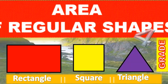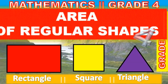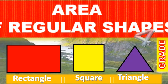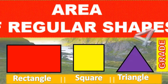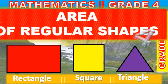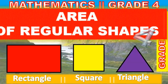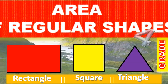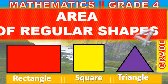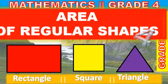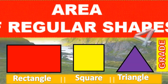Learner, find the area of a rectangle whose longer side is 9 centimeters and its shorter side is 5 centimeters. I will take 9 centimeters and multiply it by 5 centimeters to get 45 centimeters squared. Therefore, the area is 45 centimeters squared.